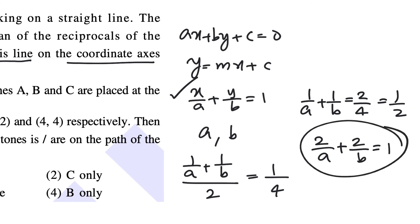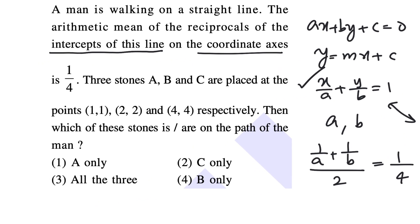And from this you can see that (2,2) is a point on the given line. That is all we can say. We cannot say anything about the point (1,1) or (4,4). So it's a very straightforward question. So the answer is (2,2) which is nothing but the point B.